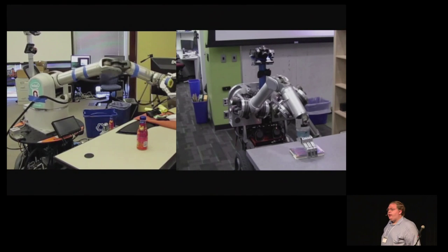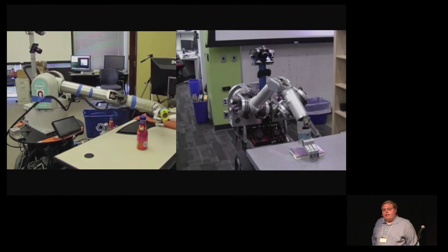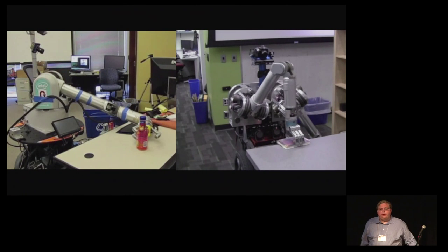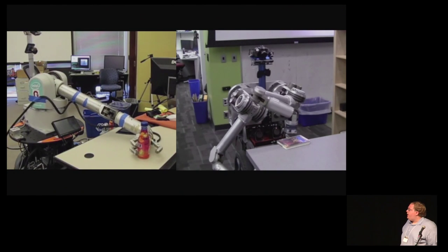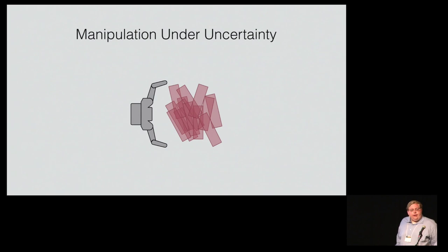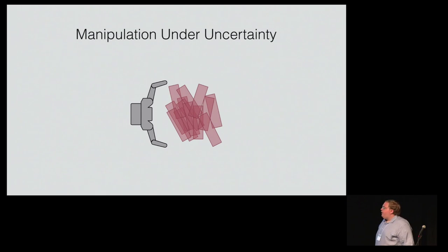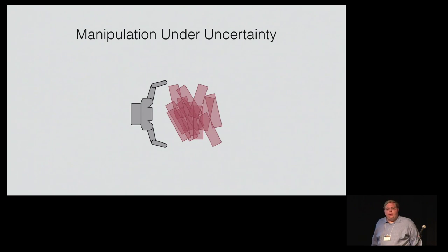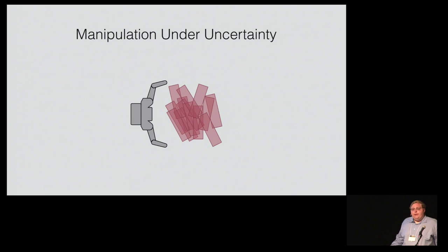We're interested in getting robots to physically interact with the environment around them — grasping, pulling, pushing, otherwise manipulating the environment. These actions generally suffer from uncertainty: there's uncertainty in the pose of the object. We don't have perfect perception, proprioception of where the hand is, or in our physics models we use while planning.